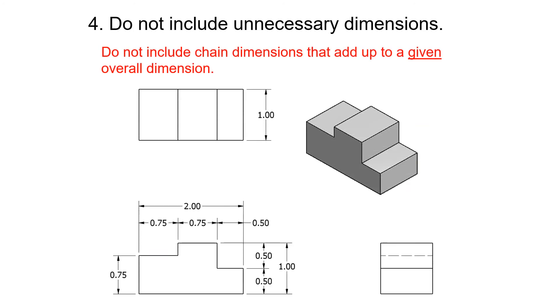Do not include unnecessary dimensions. Do not include chain dimensions that add up to a given overall dimension. This is kind of in the same vein as that previous step, but it's one step further. Can you see the dimensions that are not actually needed?